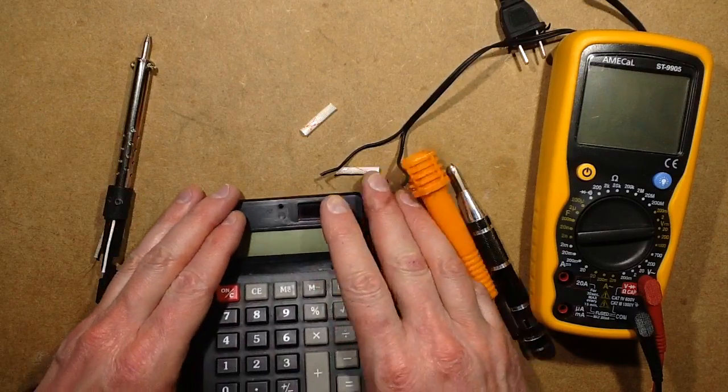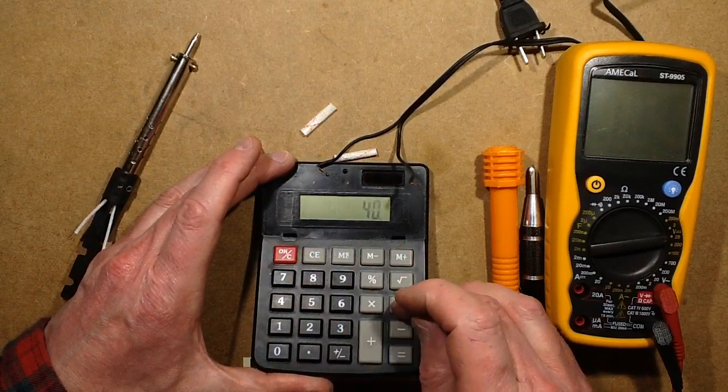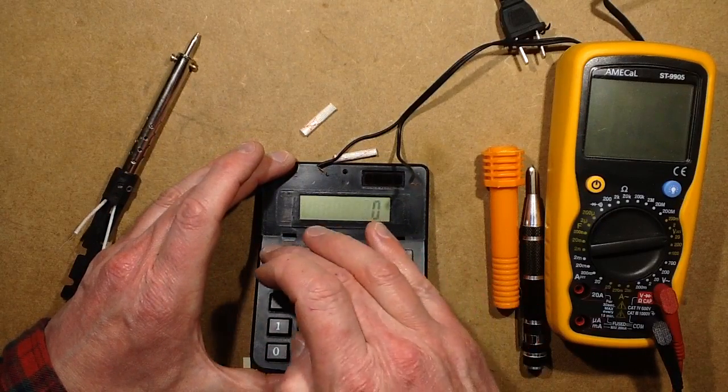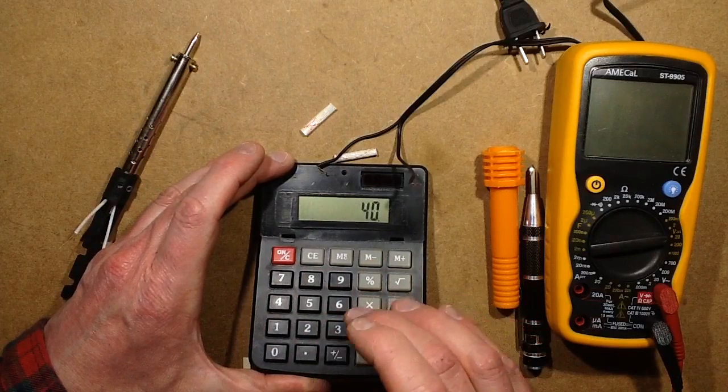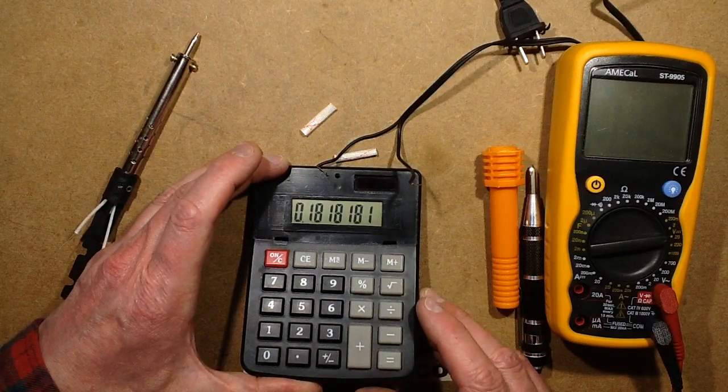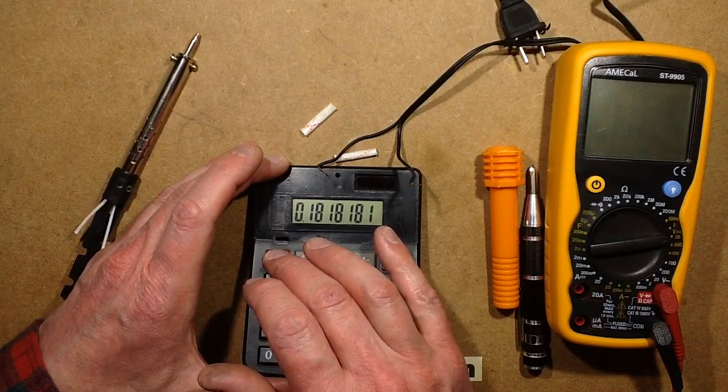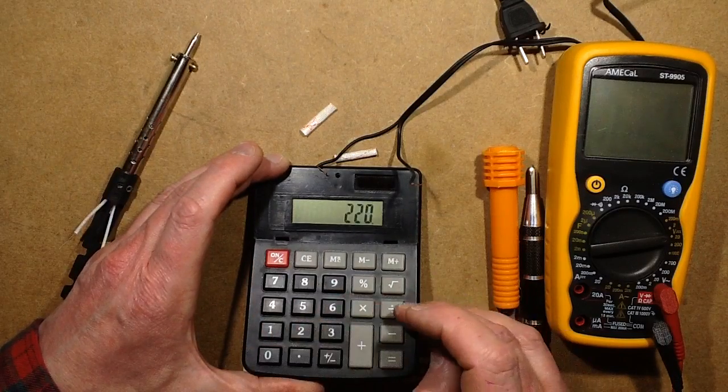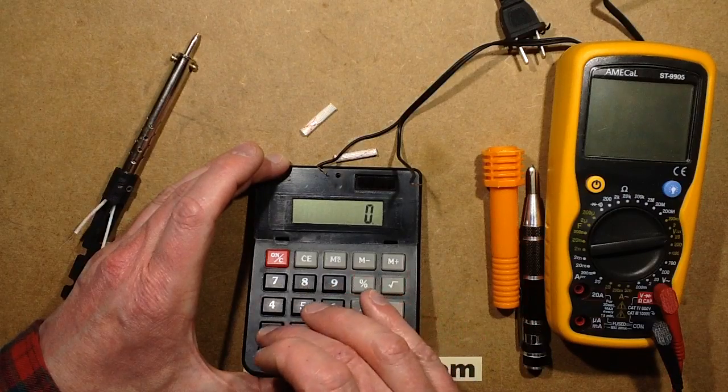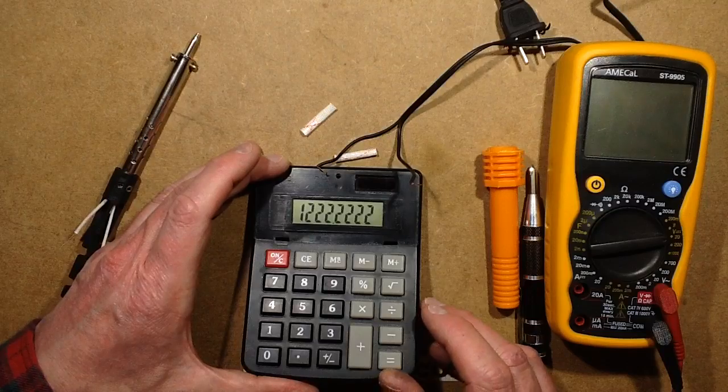So P equals I times V, I equals P over V, so we're looking for 40 watts divided by 220 volts. So we're looking for a current of about 180 milliamps. R equals V over I, 220 volts divided by 0.18, we're looking for a resistance of about 1.2k.